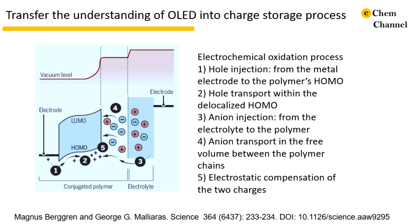Here it shows how to transfer the understanding of OLEDs into the electrochemical energy storage process. For the electrochemical oxidation process, it can be divided into five elementary steps. First step: hole injection from the metal electrode into the HOMO of the polymer. Second step: hole transport within the delocalized HOMO of the polymer. On the electrolyte side, step three: anion injection from the electrolyte into the polymer. Step four: anion transport in the free volume between the polymer crystallinities and chains. And finally, the electrostatic compensation of the two charges in the bulk of the film.